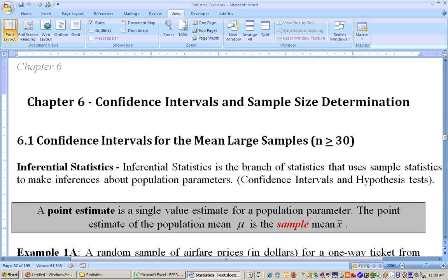The point estimate is the single value that estimates the population parameter. For example, the point estimate for the population mean, mu, is the sample mean, x bar, just like the point estimate for the population percentage, p, would be the sample percentage, p hat. But right now we're dealing with means.